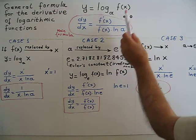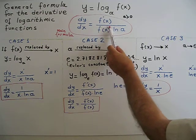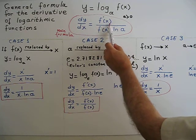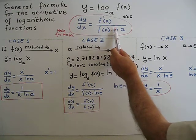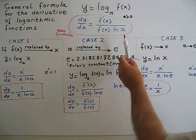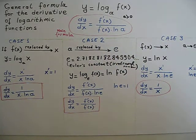f of x goes to denominator. We get the derivative of f of x to numerator and ln base comes here. This is the main formula.